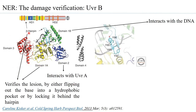Domain 1A and the beta hairpin of UVR-B are responsible for its interaction with the DNA. The beta hairpin attributes UVR-B with a weak helicase activity. UVR-B also has an ATPase activity, with structural motifs suggesting it is part of the ABC superfamily as well.